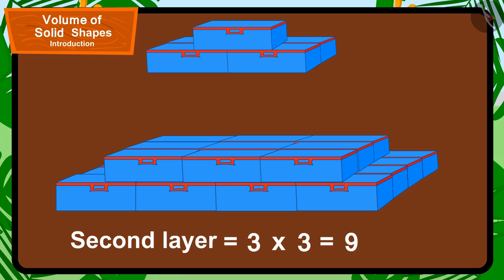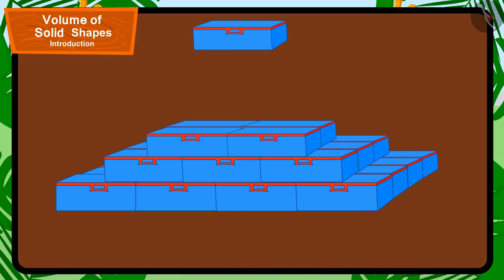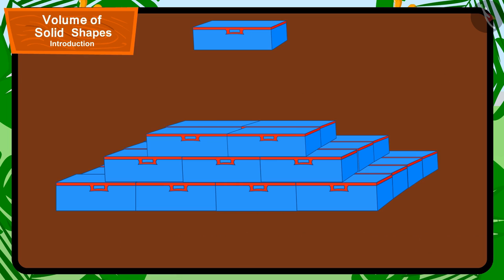The third layer has two vertical lines, and each line has two compass boxes. This means two times two, that is four compass boxes in the third layer.